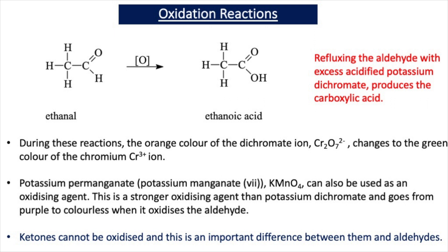The dichromate ion is responsible for the orange color in potassium dichromate, and when it changes to green you have the Cr³⁺ ion forming. The oxidation state of chromium in potassium dichromate is +6, and the chromium gets reduced from +6 to +3. It gets reduced because it gains electrons from the aldehyde that is oxidized — oxidation involves a loss of electrons. So the aldehyde loses electrons, these are picked up by chromium, and the result is a color change from orange to green. Whenever potassium dichromate oxidizes something, you always get a color change from orange to green.